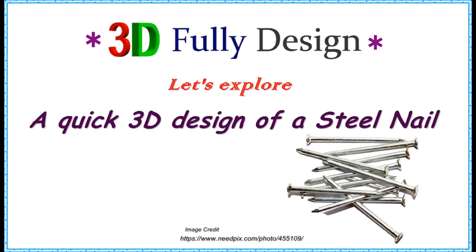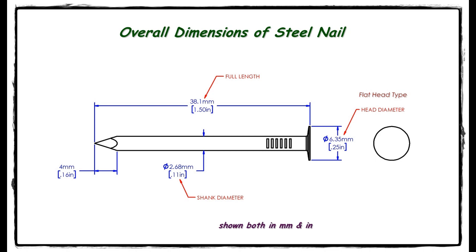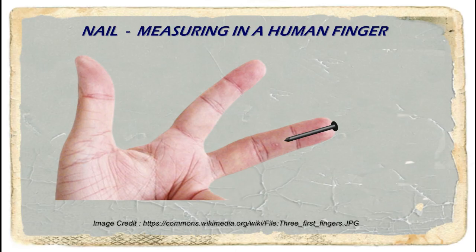Welcome to 3D Fully Design. Let's explore a quick 3D design of a steel nail. Here you could see the overall dimensions of a steel nail. Dimensions are shown in dual units, that is both in millimeters and inches. Here you could see this steel nail measuring in a human finger.